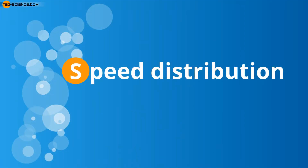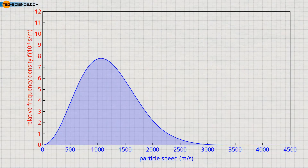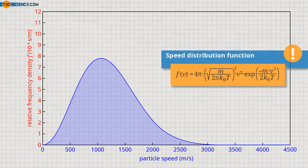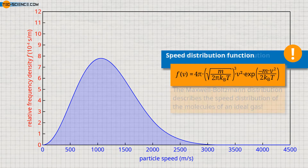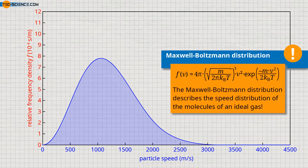Speed distribution. Using statistical methods, physicists James Clerk Maxwell and Ludwig Boltzmann were able to derive the shown formula for the molecular speed distribution in an ideal gas. For this reason this function of the so-called relative frequency density is also called the Maxwell-Boltzmann distribution function.